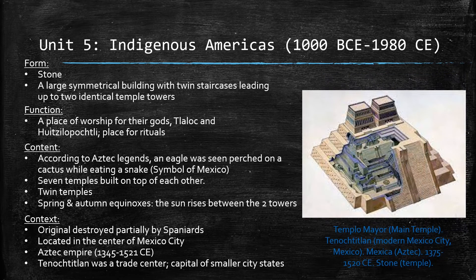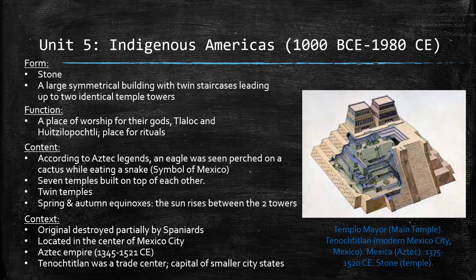For Unit 5, I chose Templo Mayor in Tenochtitlan under the Aztec Empire between 1375 to 1520 CE. Aztecs believed in folklore surrounding the gods and that they had to appease them through rituals. As this temple is a testament of their devotion to the gods, this serves as a source of their religious identity. Furthermore, it is believed that this is the site where Mexico's national symbol — an eagle perched on a cactus eating a snake — was first found, so it also serves as the country's national identity and symbol that is found on their flag.